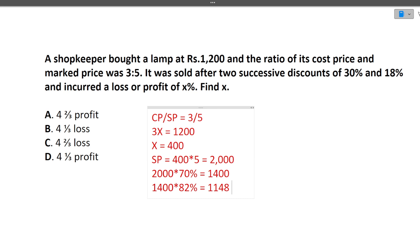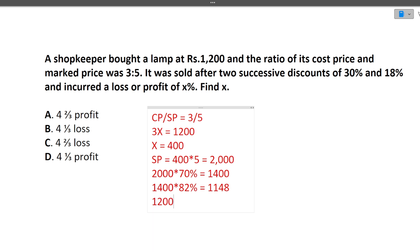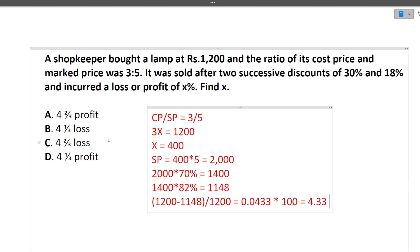We bought the material at Rs. 1200 and sold it at Rs. 1148. Since we sold at a lower price than we bought, it is a loss. The percentage of loss is cost price minus selling price, divided by cost price, into 100. That gives 4.33% loss. So option B is the correct answer here.